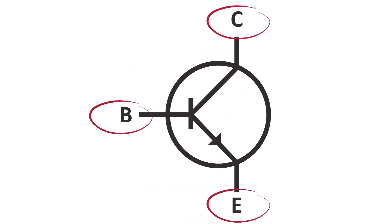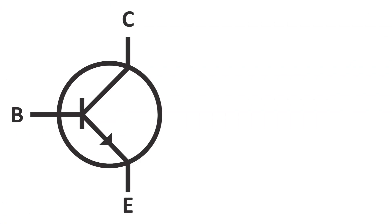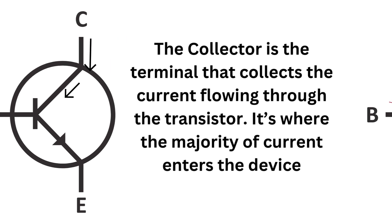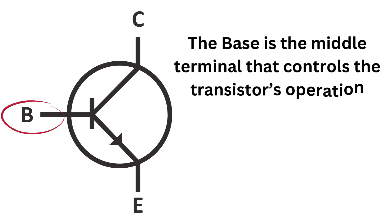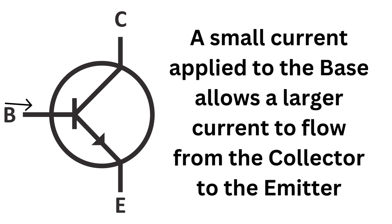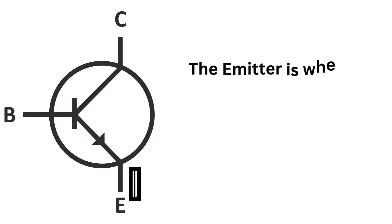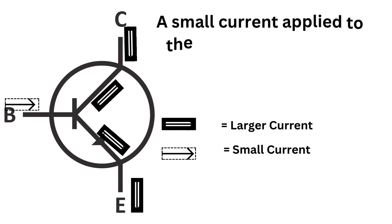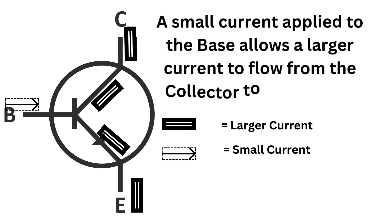Now let's talk about the three terminals of a transistor: the collector, base, and emitter. The collector is where the main current flows in and out of the transistor — it gathers current from the power supply and is where the majority of current enters the device. The base is the middle terminal that controls the transistor's operation; a small current applied to the base allows a larger current to flow from the collector to the emitter. The emitter is where current exits the transistor, sending the controlled current out to the rest of the circuit.